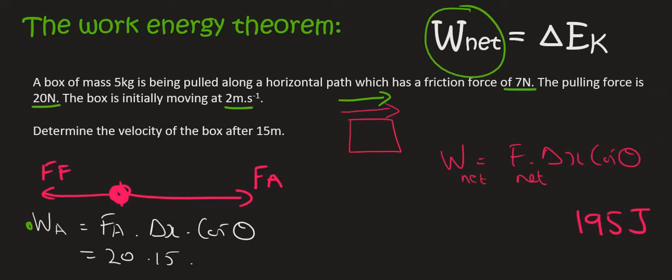So the applied force is 20 newtons. The distance is 15. And if the object's moving to the right, the applied force would also go to the right. And so that's going to be cos of 0. And so 20 times 15 is going to give us 300 joules.